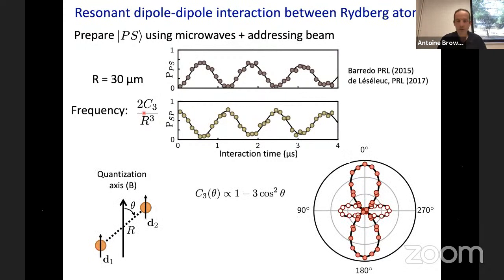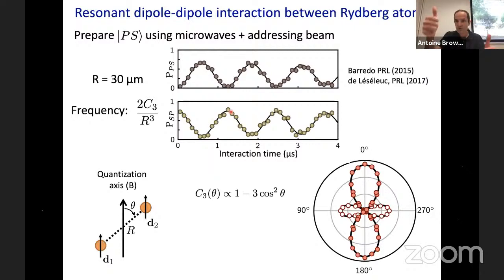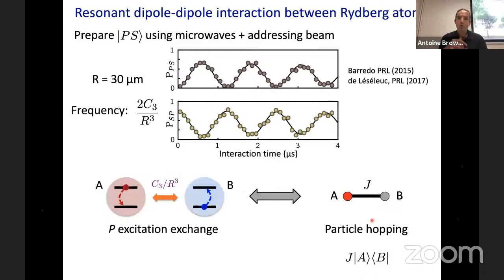The resonant dipole interaction is anisotropic. If the quantization axis makes angle θ with the internuclear axis, the C3 coefficient varies as (1 − 3cos²θ), as for classical dipoles. Measuring the oscillation frequency for various angles produces a polar plot that follows this angular pattern nicely. Importantly, there is a magic angle near 55° where the C3 coefficient exactly vanishes — this will be crucial in what follows.